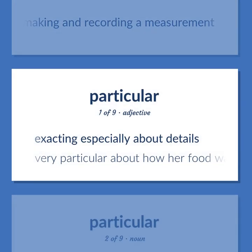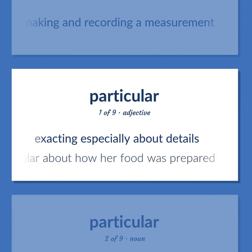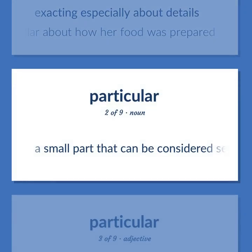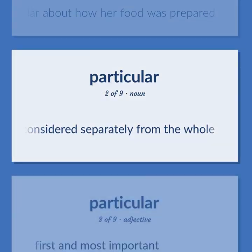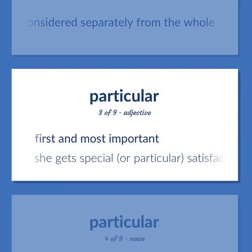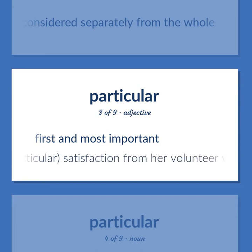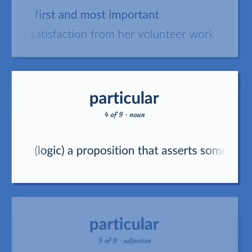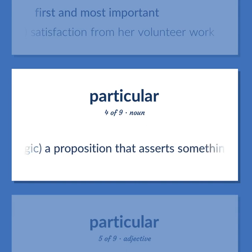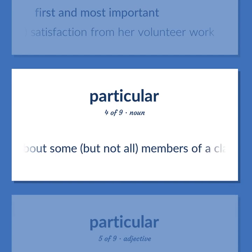Particular: Exacting, especially about details — very particular about how her food was prepared. A small part that can be considered separately from the whole. First and most important — she gets special, or particular, satisfaction from her volunteer work. Logic: A proposition that asserts something about some, but not all, members of a class.